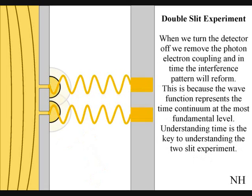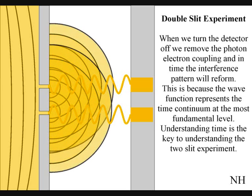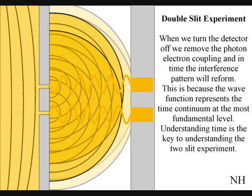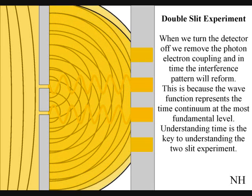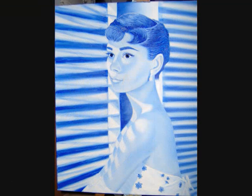When we turn the detector off, we remove the photon-electron coupling, and in time the interference pattern will reform. Just like in Newton's first law of motion, the interference pattern will continue to maintain its state unless acted upon by an external force.